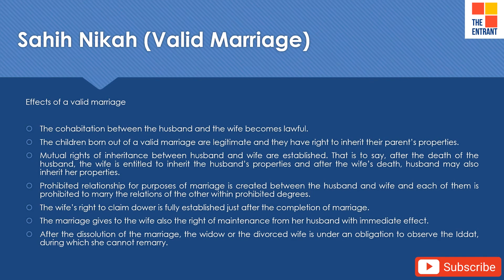The effects of a valid marriage: The cohabitation between the husband and the wife becomes lawful. The children born out of a valid marriage are considered to be legitimate and they have the right to inherit their parents' properties. Mutual rights of inheritance between the husband and wife are established — after the death of the husband, the wife is entitled to inherit the husband's properties, and after the wife's death, the husband may also inherit her properties. Prohibited relationship for purposes of marriage is created between the husband and wife, and each of them is prohibited to marry the relations of the other within the prohibited degrees.